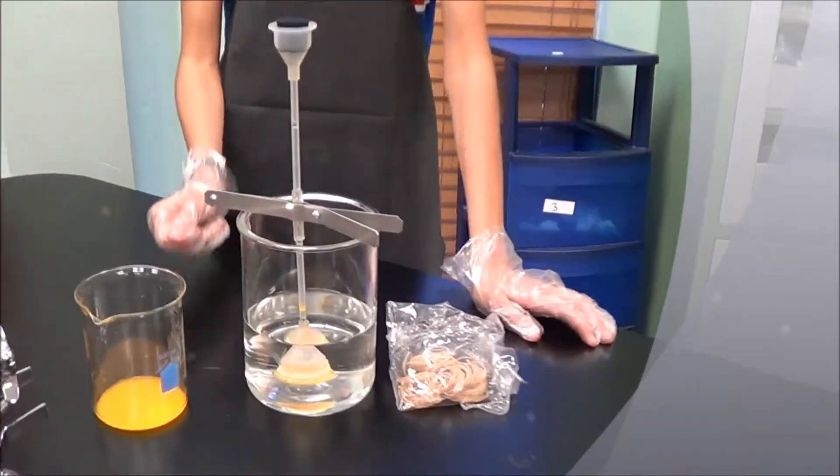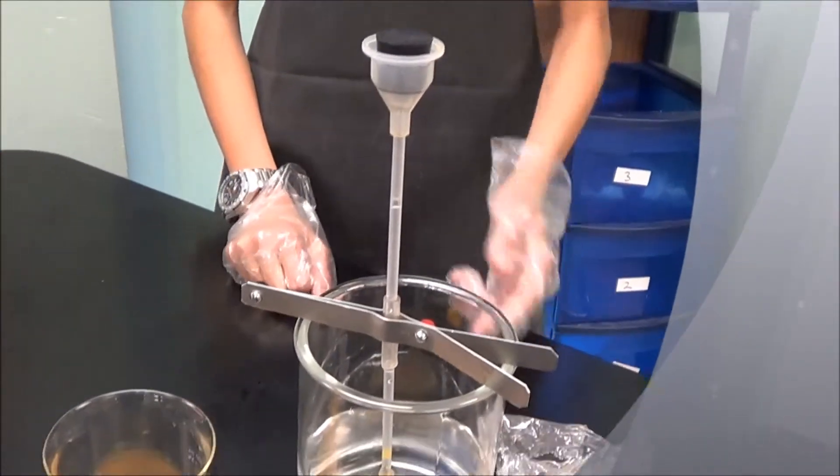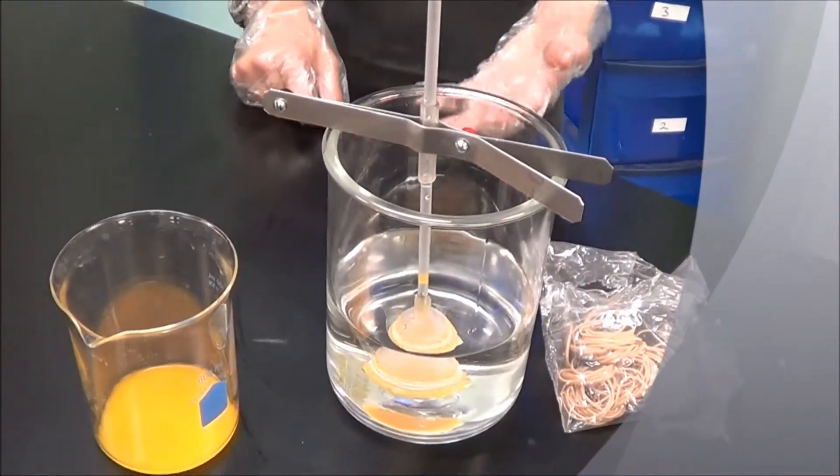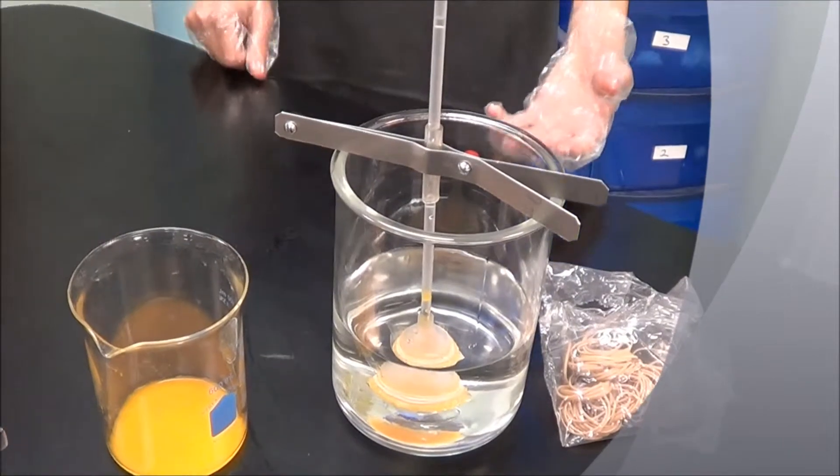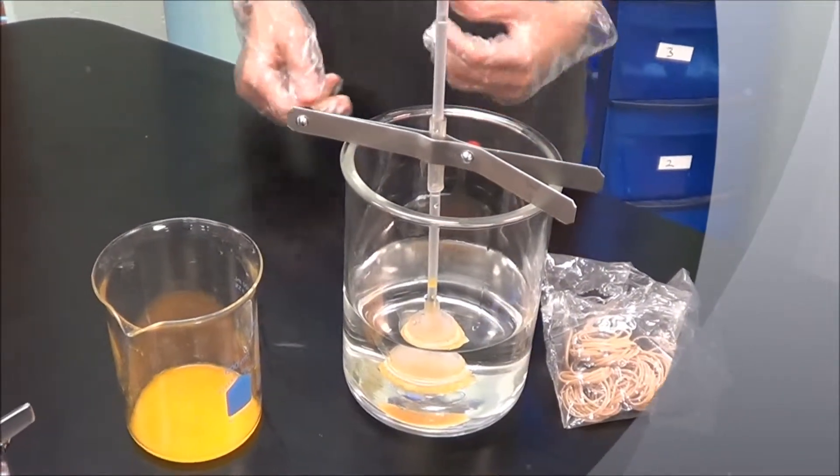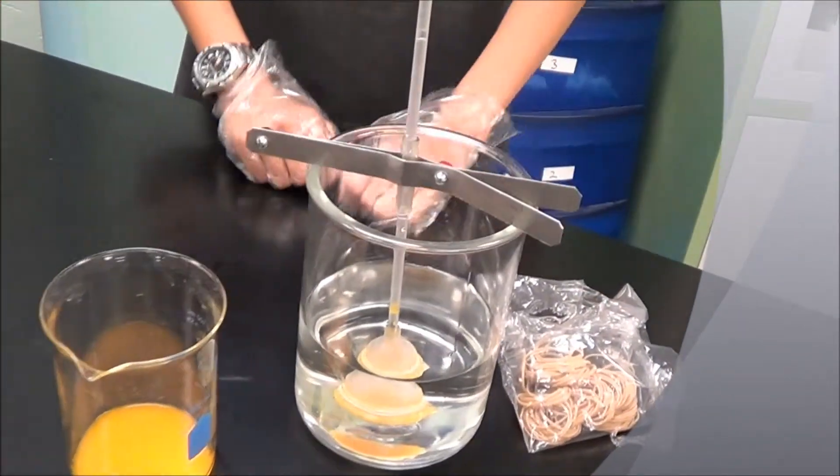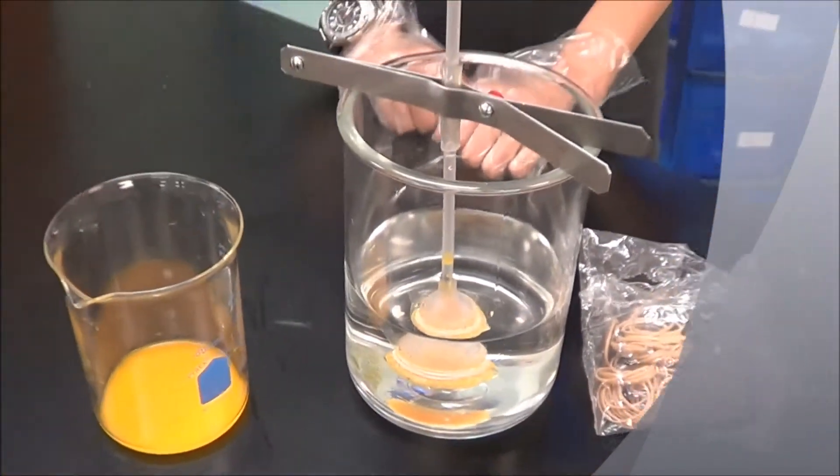...will go from a tubing through the semi-permeable membrane into the water here which has a lack of sugar, therefore a smaller amount of concentration of sugar. And in about 20 or so minutes you should see the yellow dye in the water. And that's about it.